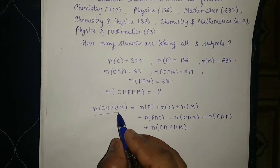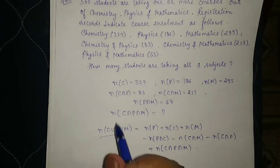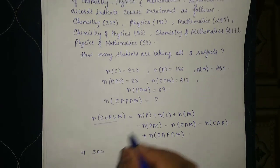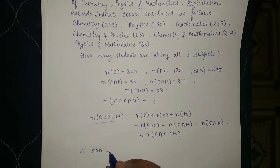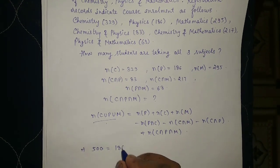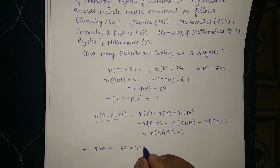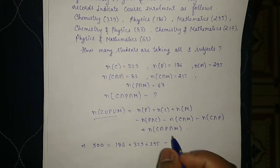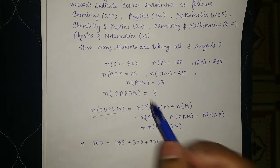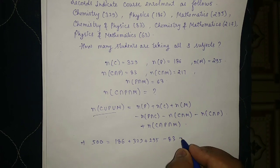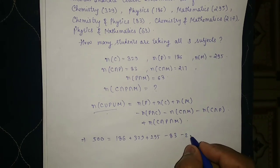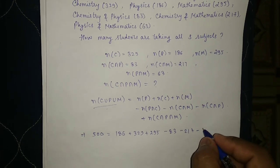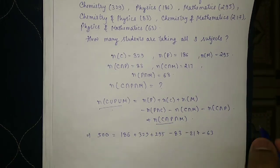So given is, the number of students is 500. Physics is 186, chemistry is 329, maths is 295, physics and chemistry is 83, chemistry and maths is 217, and this is 63. We have to find this.